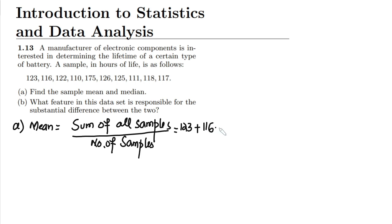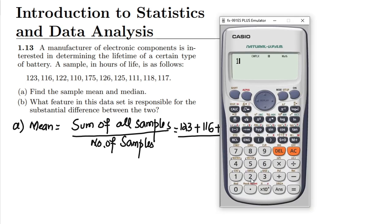I have to add 123 plus 116 plus 122, up to 117 which is the last part, and divide it by the total number of points. Let me count them: one, two, three, four, five, six, seven, eight, nine, ten — so 10 total. Let me add them: 123 plus 116 plus 122 plus 110 plus 175 plus 126 plus 125 plus 111.